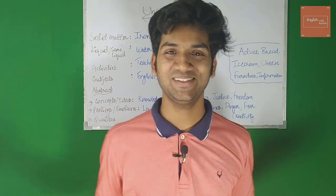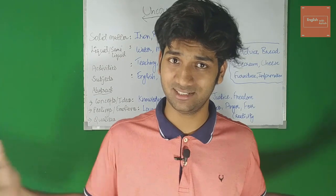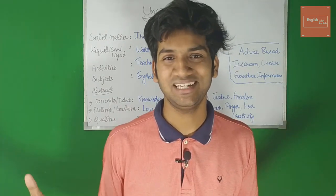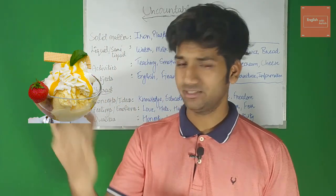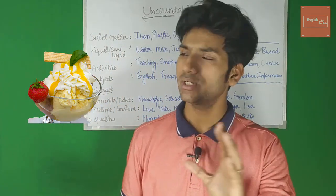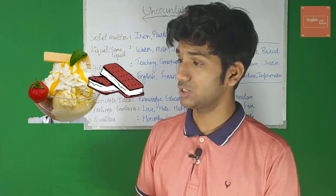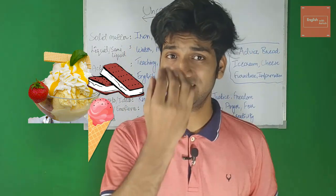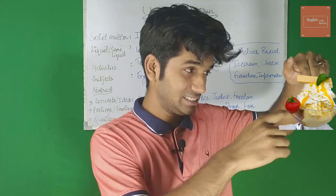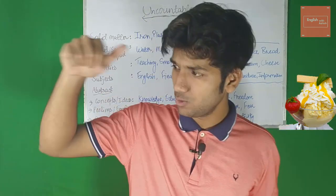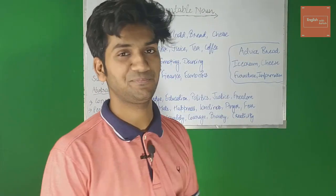The third word is 'ice cream'. You might say we can count ice cream — but it's uncountable. You can count cubes of ice cream, you can count cones of ice cream, but you cannot count ice cream as a whole, as a substance, as a material. You can count the cone, you can count the cube, but you cannot count the substance ice cream.